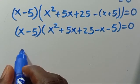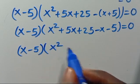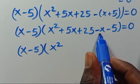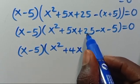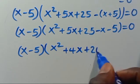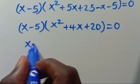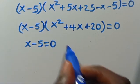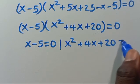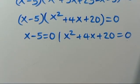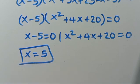From here we have X minus 5 in parentheses times the quantity X squared plus 5X plus 25 minus X minus 5, which simplifies to X squared plus 4X plus 20 in parentheses equals 0. For the overall expression to equal 0, from here X will be 5 — the first solution.